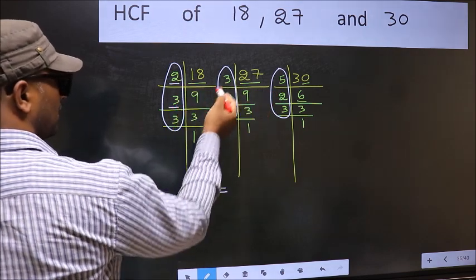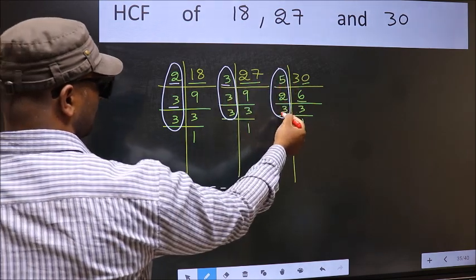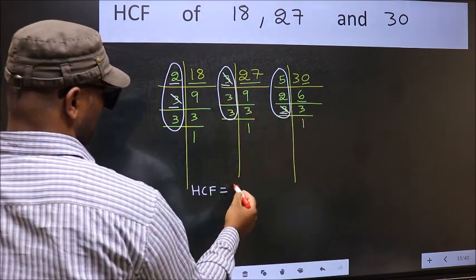Next number, 3. Do we have 3 here? Yes. Go to the next place. Do we have 3 here? Yes. So mark 3 right here.